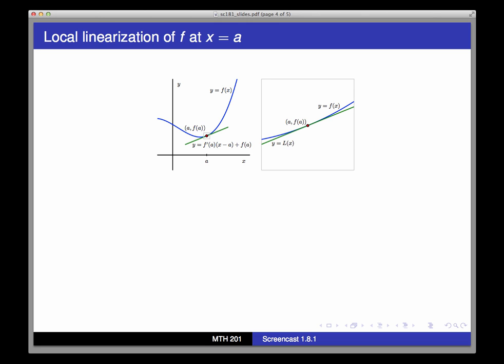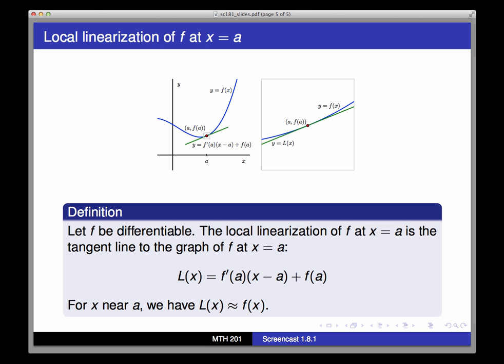In a previous section, we referred to this phenomenon of f looking like its tangent line when we zoom in by saying that f is locally linear at x equals a. So we often refer to the tangent line to the graph of f at x equals a as the local linearization of f at x equals a.